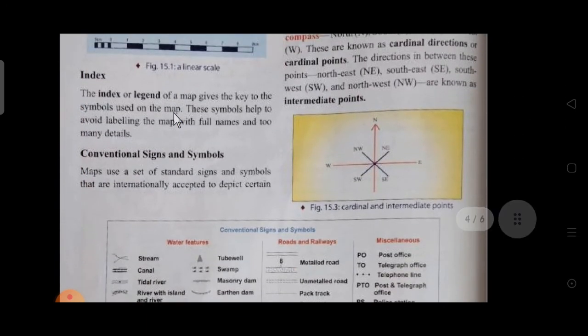The third component is index or legend. The index or legend of a map gives the key to the symbols used on the map. These symbols help to avoid labeling the map with full names and too many details. At the bottom of the map, whatever symbols are there, their meaning is given, which helps avoid congestion on the map.